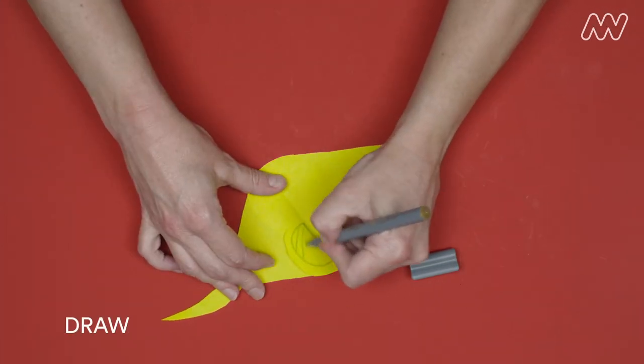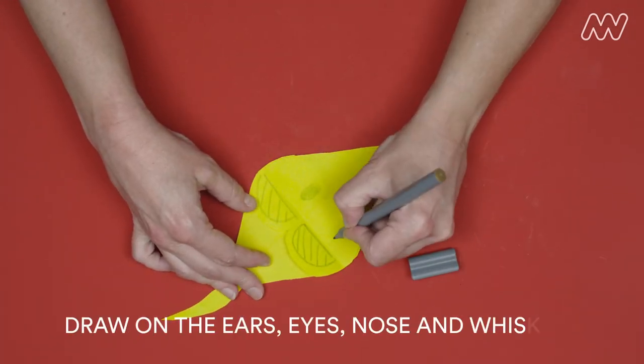Step 5. Draw on the ears, eyes, nose and whiskers.